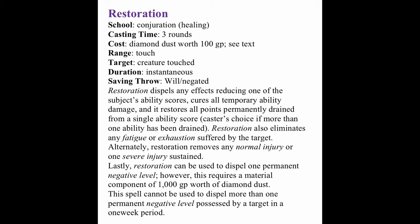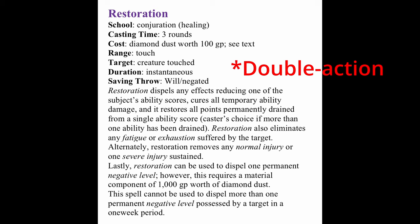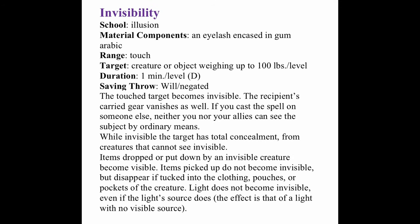Another example is Restoration — a rank 3 spell from the school of Conjuration. Unlike most spells higher than rank 0, it has a casting time of three rounds instead of a single action. It has a listed cost of diamond dust worth 100 gold pieces, a range of touch, and affects a creature touched.